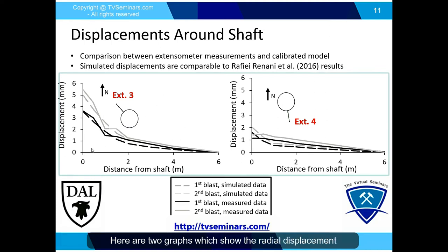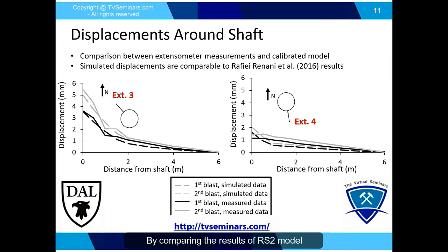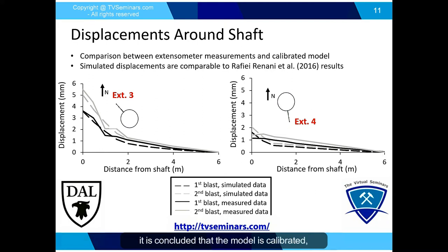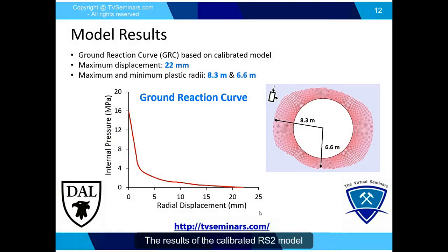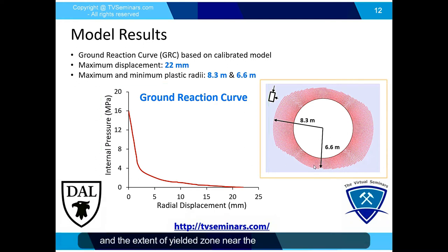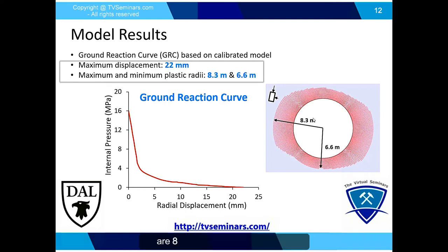Two graphs show the radial displacement as a function of distance from the shaft. Extensometer measurements are shown by solid curves for the first and second rounds of excavation. By comparing RS2 model results with measured displacements using extensometers, it is concluded that the model is calibrated and can be used to simulate the shotcrete liner and assess its stability. The maximum radial displacement is 22 mm, and the maximum and minimum plastic radii are 8.3 m and 6.6 m respectively.